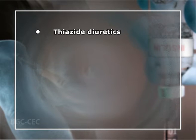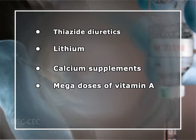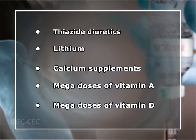A variety of medications can predispose to hypercalcemia — for example, thiazide diuretics, lithium, calcium supplements, megadoses of vitamin A, and megadoses of vitamin D. With this, we come to the end of today's lecture on insulin, hypoglycemic drugs, and glucagon, as well as drugs affecting calcium balance. Hope it was helpful to you. Thanks for watching and have a good day.